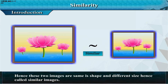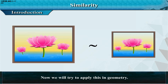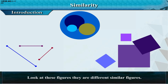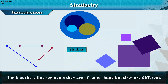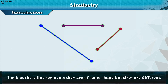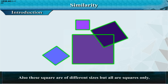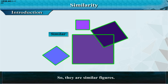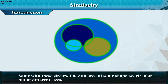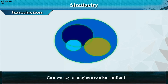Now we will apply this in geometry. Look at these figures — they are different similar figures. Line segments are of same shape but sizes are different, hence they are similar. Squares of different sizes are all squares only, so they are similar figures. Similarly, circles are all of the same shape — circular — but of different sizes.